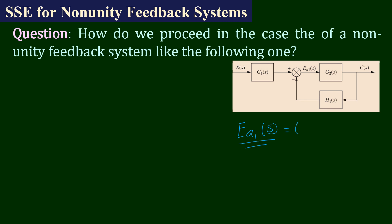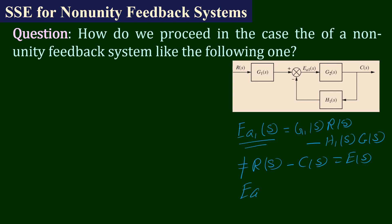The controller manipulates E_A(s) to produce an actuation signal which acts upon the plant, and in response the plant produces output C(s). E_A(s) is equal to G1(s)·R(s) minus H1(s)·C(s), and this is not equal to R(s) minus C(s), which would be E(s). This means the actuation signal E_A(s) is not equal to E(s). In this situation we need an analytic technique to find the true error from the block diagram.